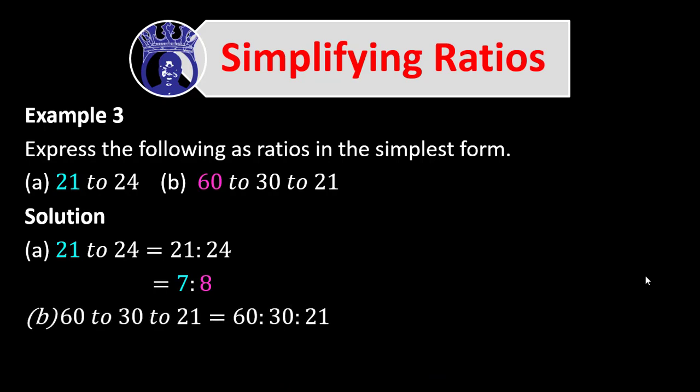For part B, 16 to 30 to 21 is a three-term ratio. Dividing all parts by the HCF of 16, 30, and 21 — which is 3 — gives: 16 divided by 3 gives approximately 5 remainder 1, 30 divided by 3 gives 10, and 21 divided by 3 gives 7, as shown on the screen.